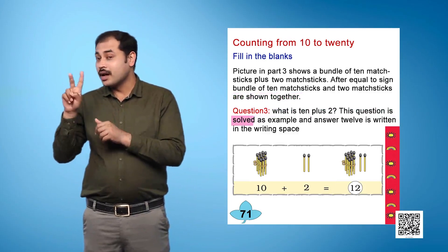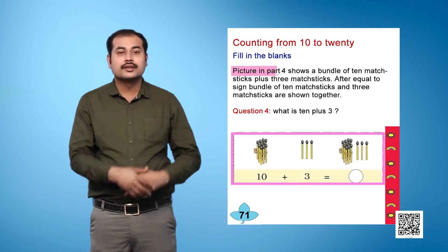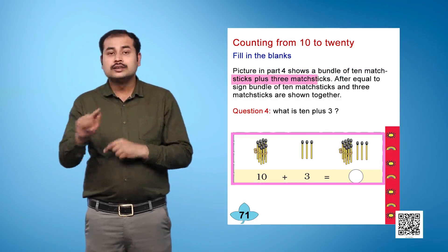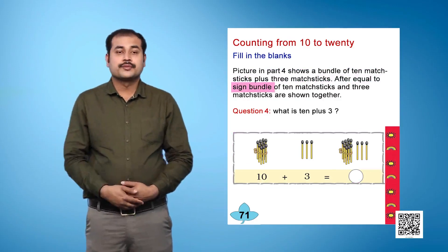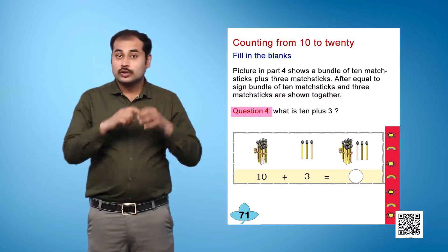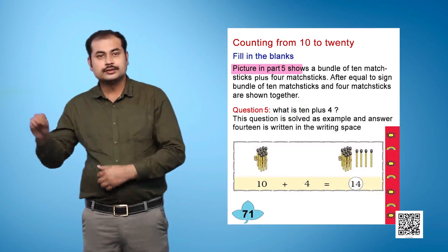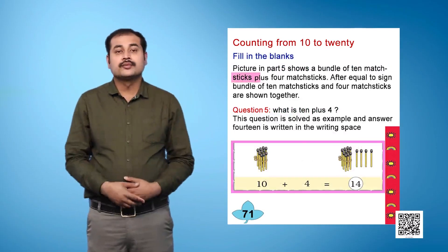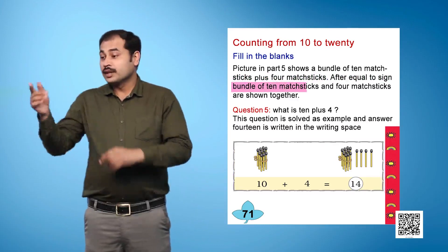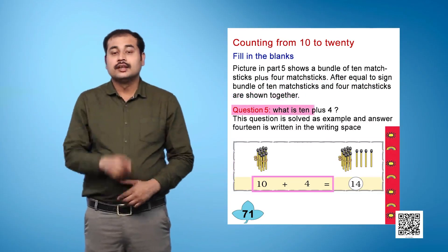Question 3: What is 10 plus 2? This question is solved as an example and the answer 12 is written in the writing space. Picture in Part 4 shows a bundle of 10 matchsticks plus 3 matchsticks. After the equal to sign, the bundle of 10 matchsticks and 3 matchsticks are shown together. Question 4: What is 10 plus 3? Picture in Part 5 shows a bundle of 10 matchsticks plus 4 matchsticks. After the equal to sign, the bundle of 10 matchsticks and 4 matchsticks are shown together. Question 5: What is 10 plus 4?